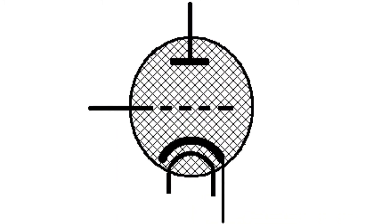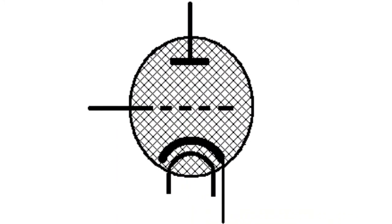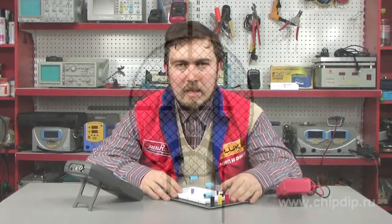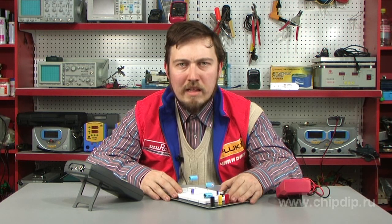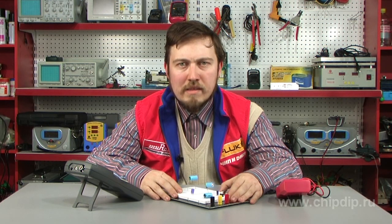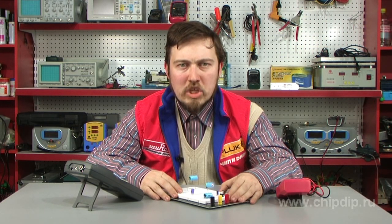A cold cathode thyrotron is a three-electrode rectifying device having an anode, a cathode, and a grid designed to control ignition. In some cases, a powerful thyrotron may be used in the gas-filled diode mode — for this purpose, the grid is connected to the cathode by active resistance, or a small positive potential relative to the cathode is transmitted to the grid. The thyrotron grid has low permeability, so the anode field has practically no effect in the cathode area.